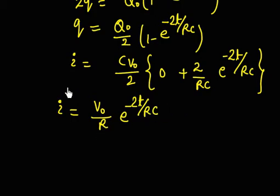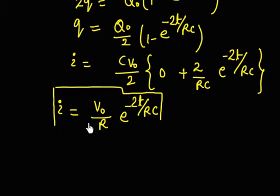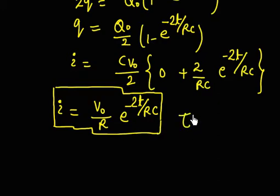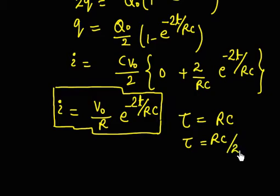So the time constant has changed. The exponent is 2t/RC, meaning the time constant is RC/2, not RC. For a normal RC circuit the time constant is RC, but now it is RC/2. One can remember this: when charging and discharging both happen through one resistor simultaneously, the time constant is halved — it is like an average.